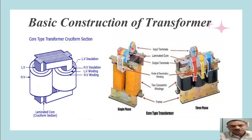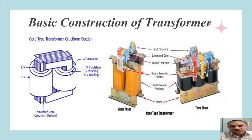The output terminals consist of a number of terminals because, as per requirement, we can provide tapping on the secondary winding to get different voltage outputs. There is a single input but we can get multi-level output voltage. For the three phase prototype transformer, for each phase — R, Y, and B — we have three pairs of LV and HV windings. The primary windings connected to the supply system have terminals here, and the secondary winding terminals are on the front side with multiple output terminals for different voltage levels.